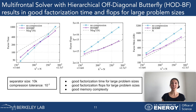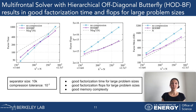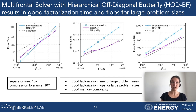Here we see results for the multifrontal solver with HODBF—hierarchical off-diagonal butterfly compression—used as a preconditioner followed by a GMRES solver. The results show factorization time, factorization flops in the middle plot, and factorization memory to the right. The next slide will show solve time and solve flops.